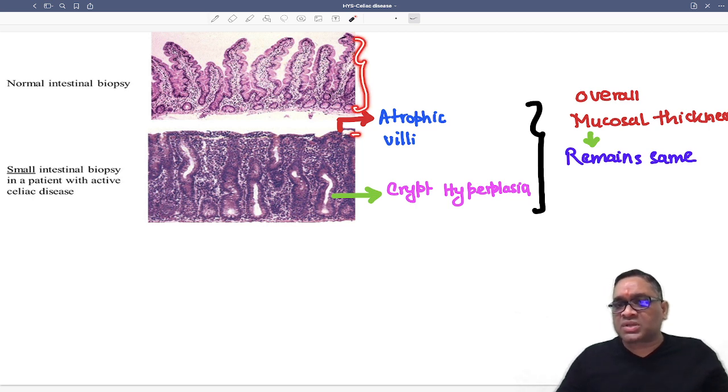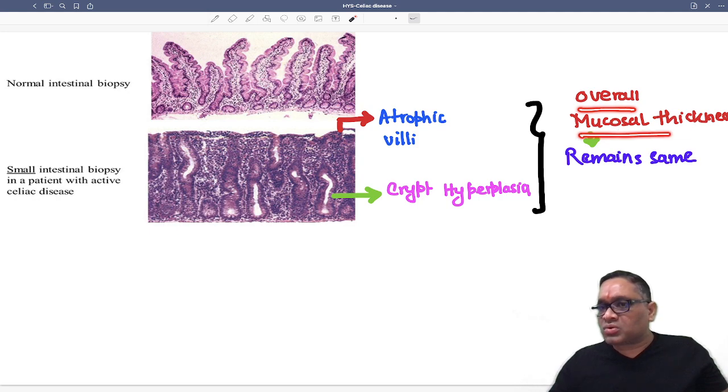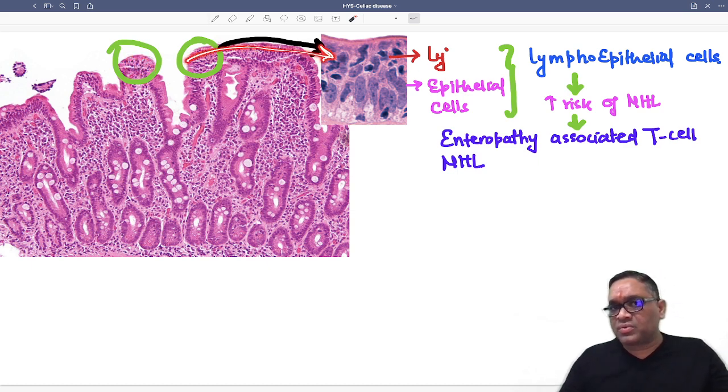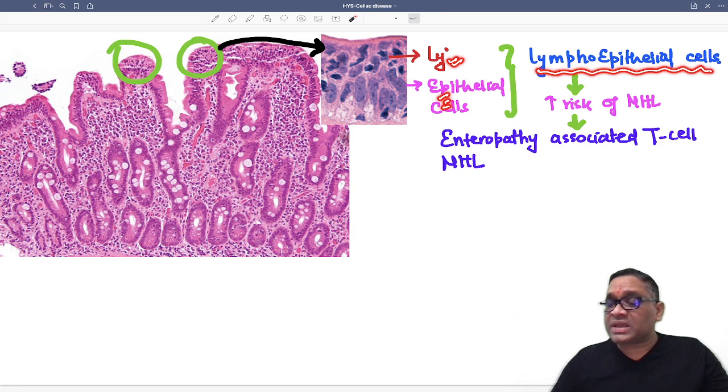This is very important. Overall mucosal thickness will remain same in celiac disease. Now in this, what we are seeing, this is the mucosal epithelial cell where you can see tiny lymphocytic infiltrates are infiltrating. This is on high power view, you can see these are the lymphocytes and these are the epithelial cells. Lymphoepithelial lesion, this is called, lymphocytes are infiltrating epithelial cell.